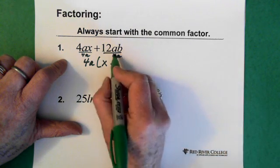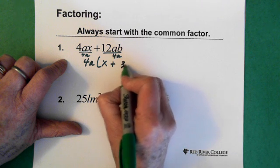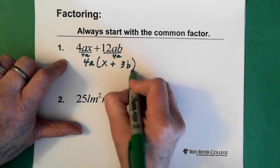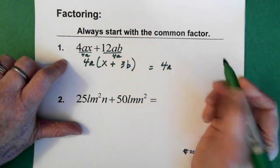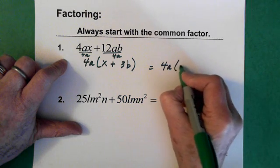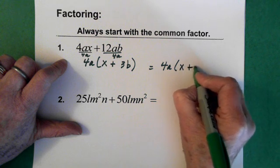You're dividing this one essentially by 4A as well, and that leaves you with 3B. So your answer becomes 4A, which is what was the common term, and you pulled out, and you're left with X plus 3B.